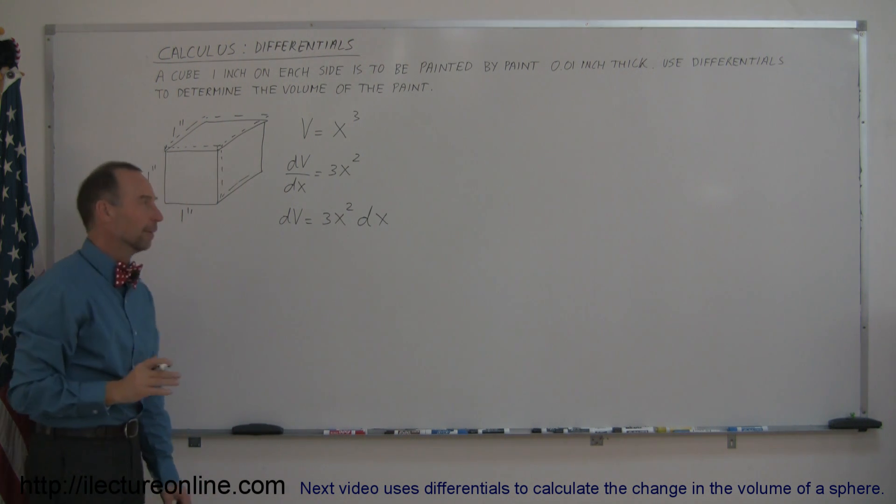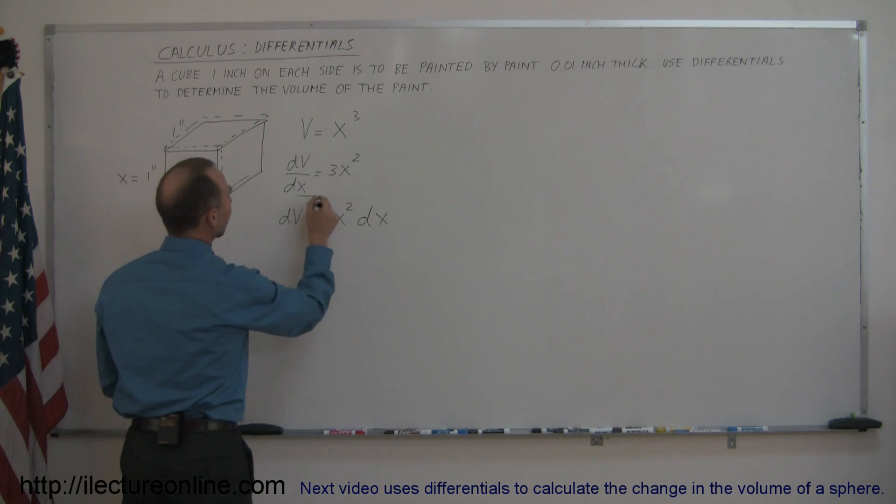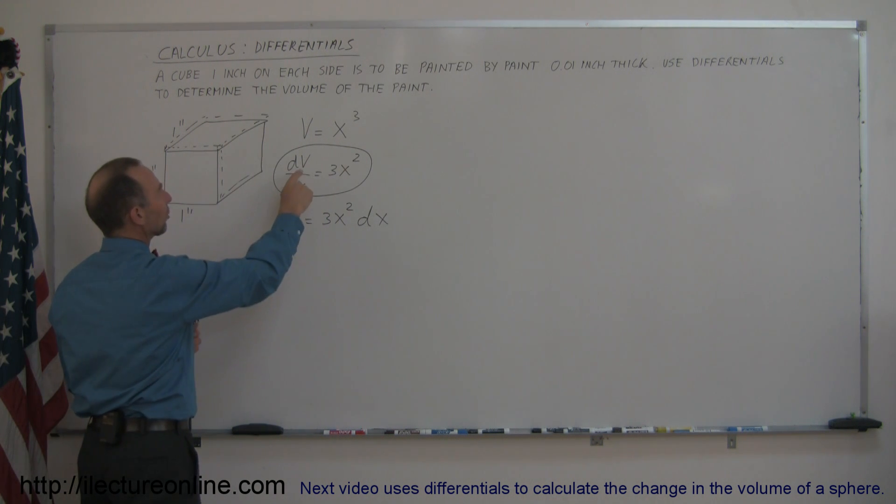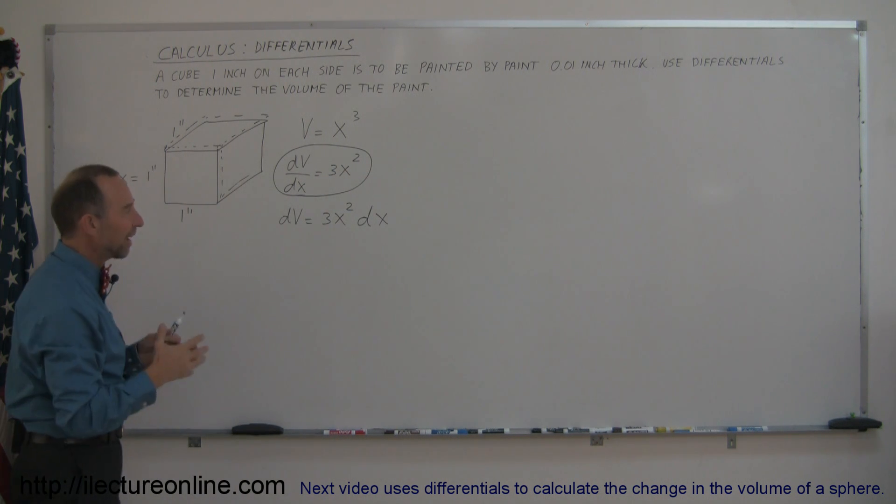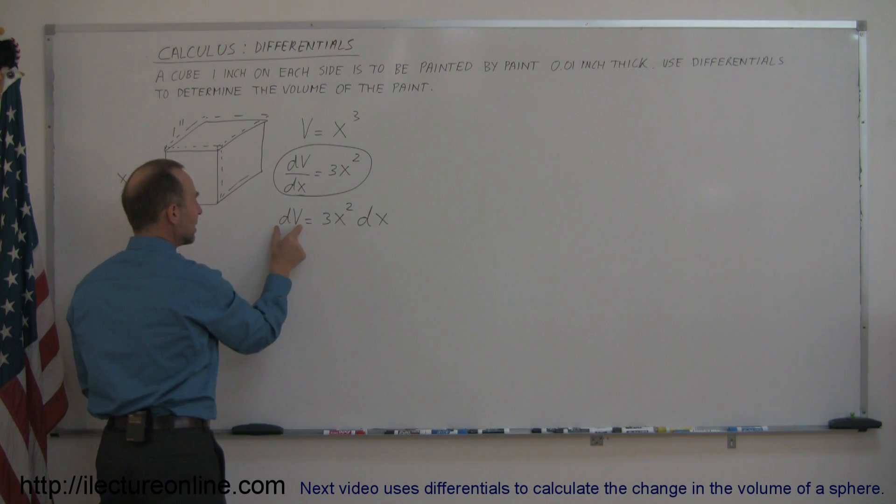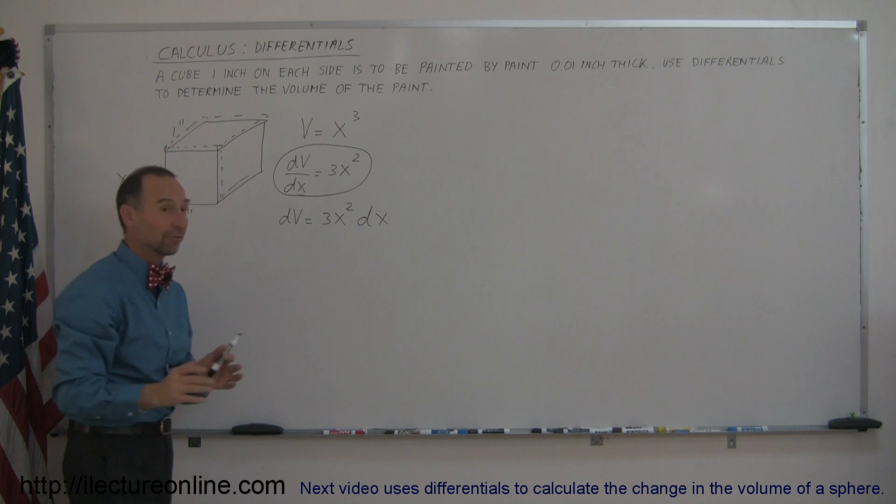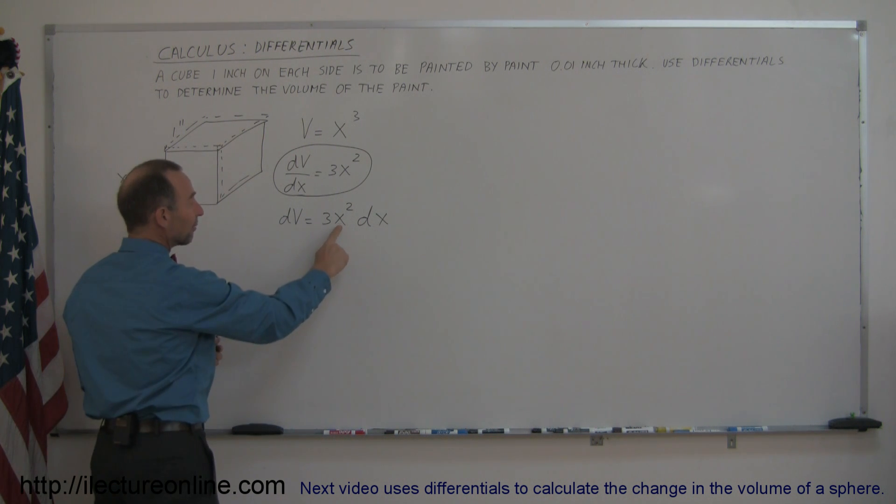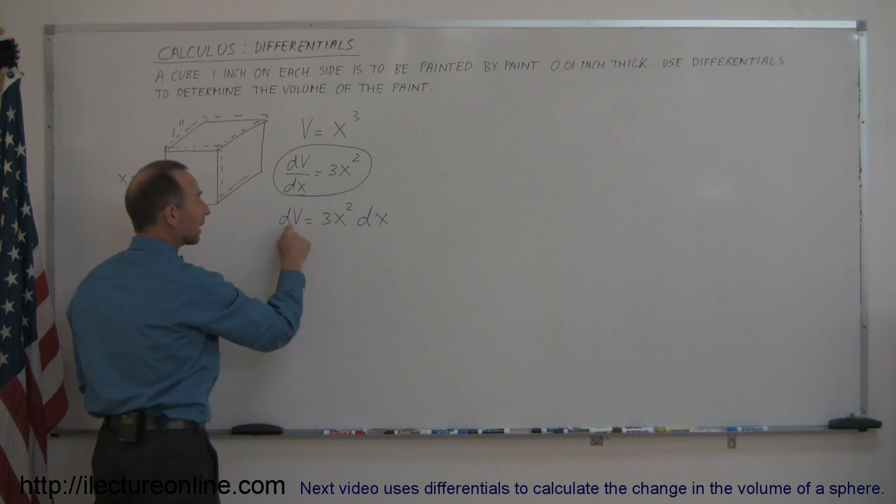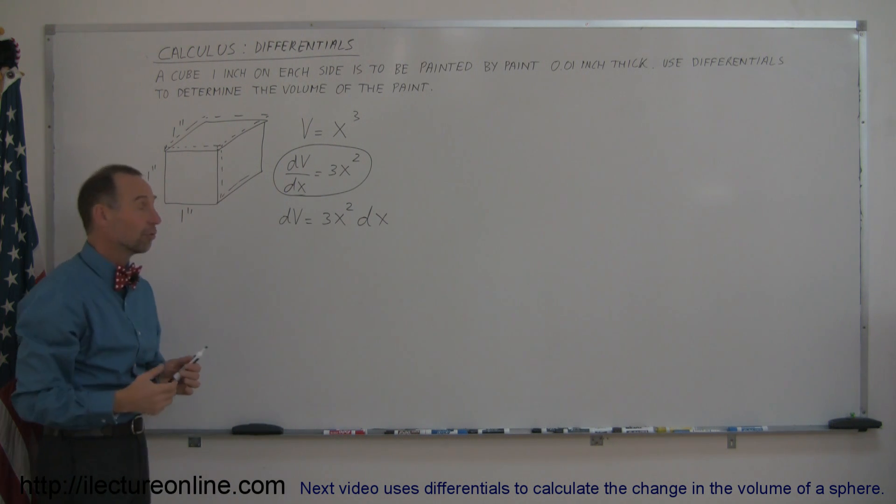Now here comes the interesting part. If we leave it as a derivative, this shows that the change of the volume with respect to x is equal to this. So I can indicate how fast the volume is changing. But if I now move the dx over here, and the dV and the dx by themselves are called differentials, then for a given value of x, if I change the x by a little bit, I can now calculate how much the v changes, how much the volume changes.